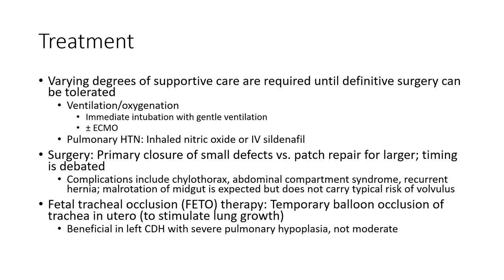Treatment: varying degrees of supportive care are required until surgery can be tolerated. Ventilation or stimulation, warm-up; we have to consider inhaled nitric oxide IV. Surfactant lipid. Surgery: primary closure of small defects with patch repair provides extra time with the body. Part of catheter care and treatment. ECMO therapy is temporarily borrowed from the treatment of the trachea in the usual draw. Beneficial in Bochdalek congenital diaphragmatic hernia with severe pulmonary hypoplasia, not mortally.